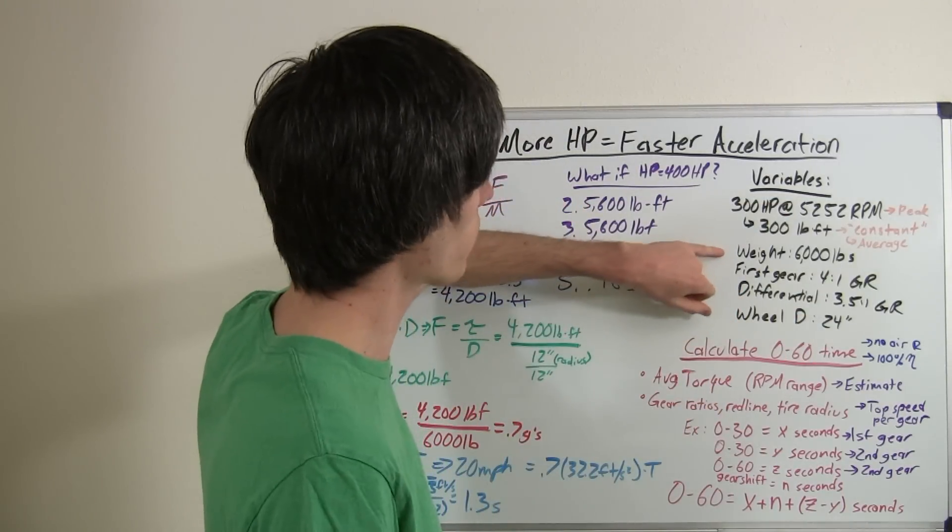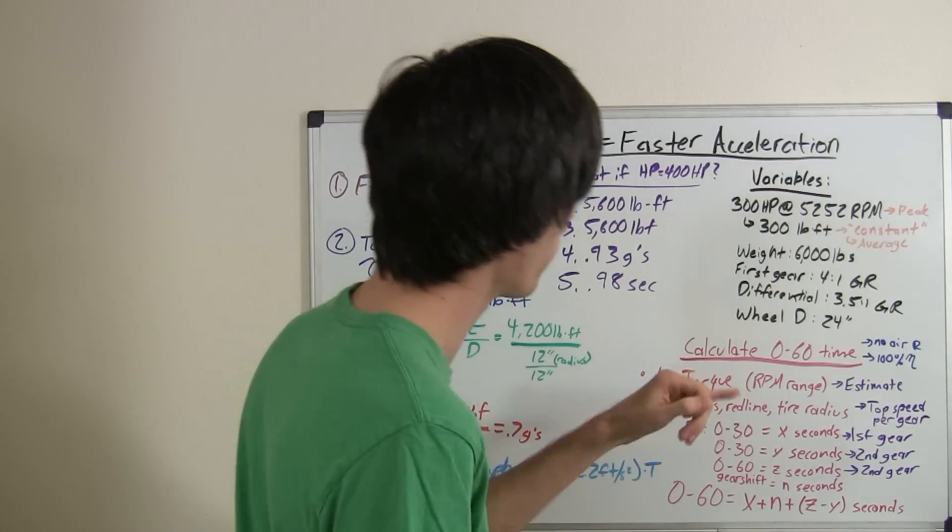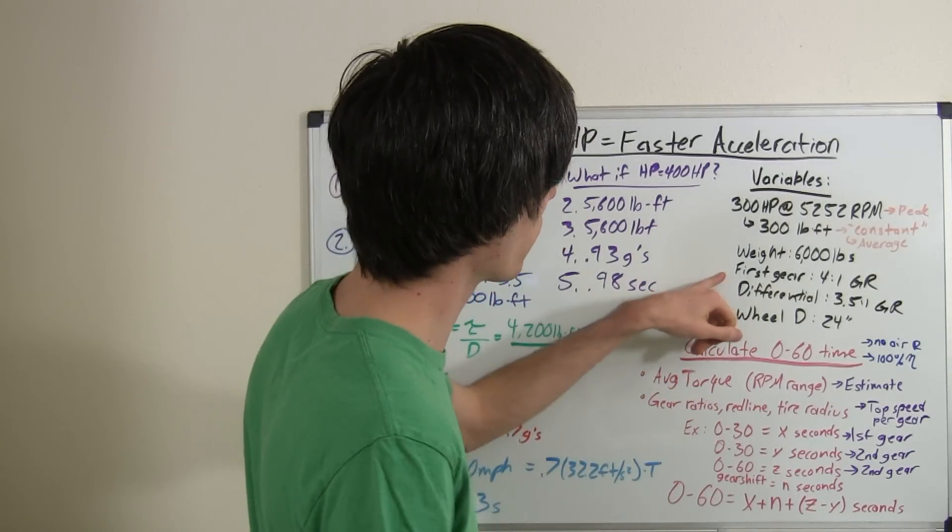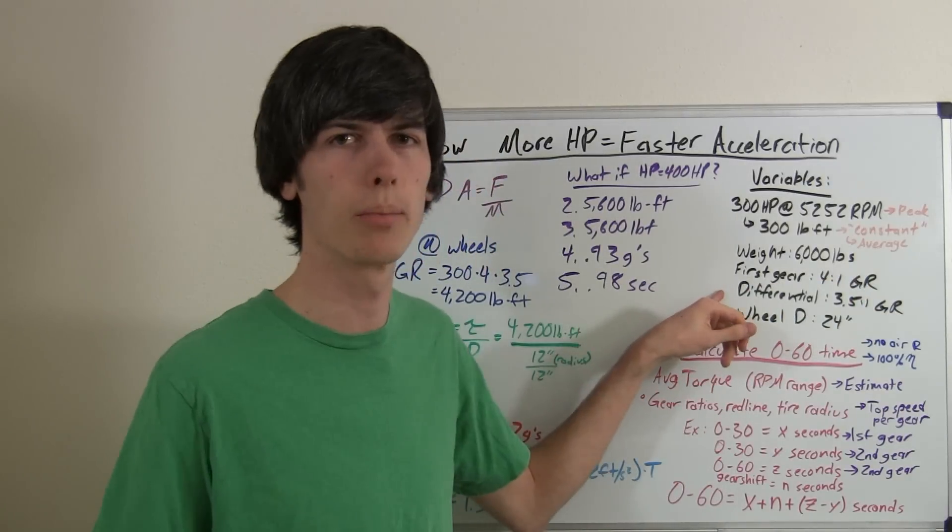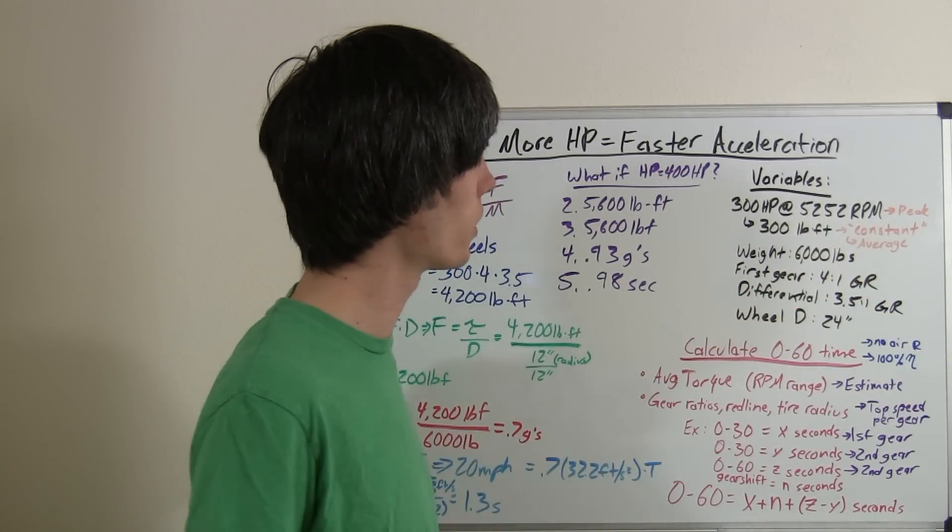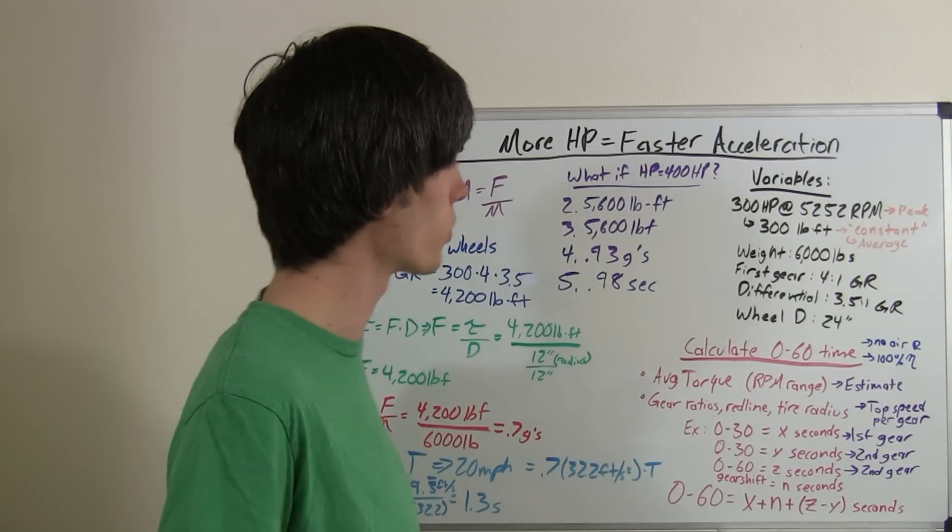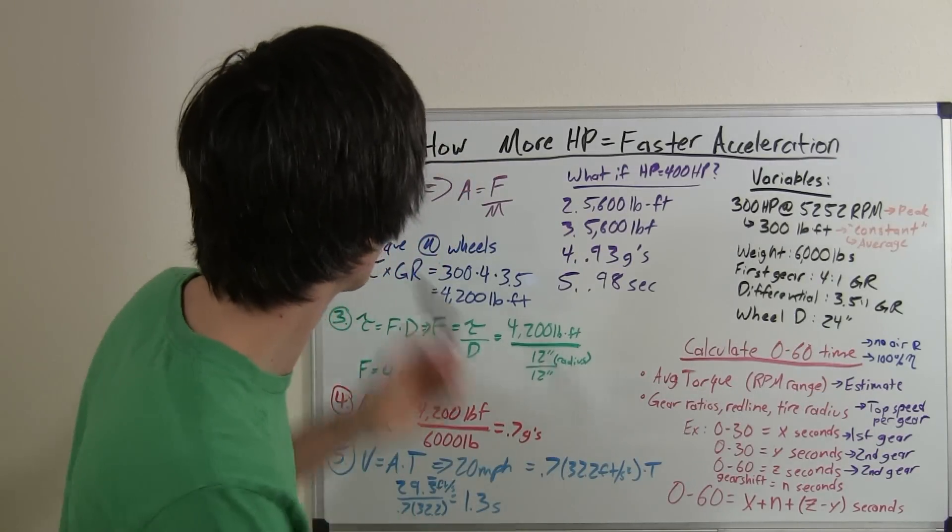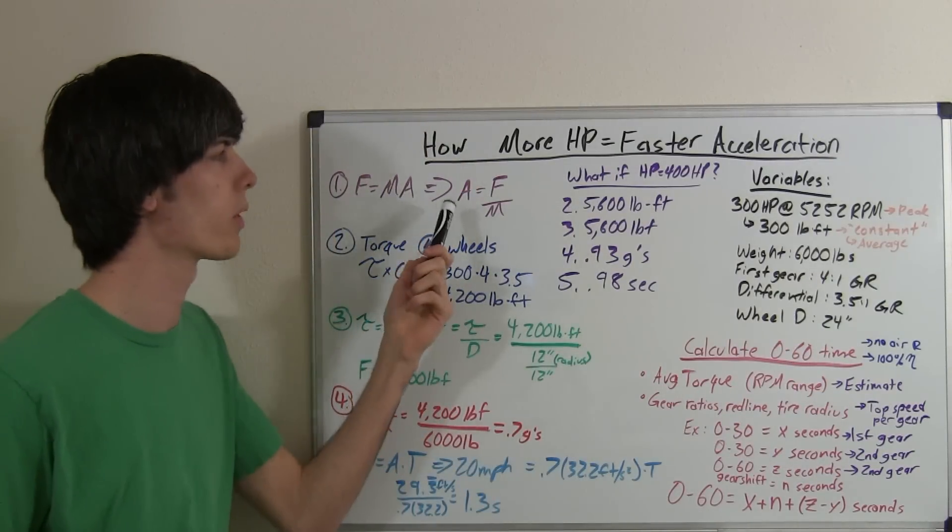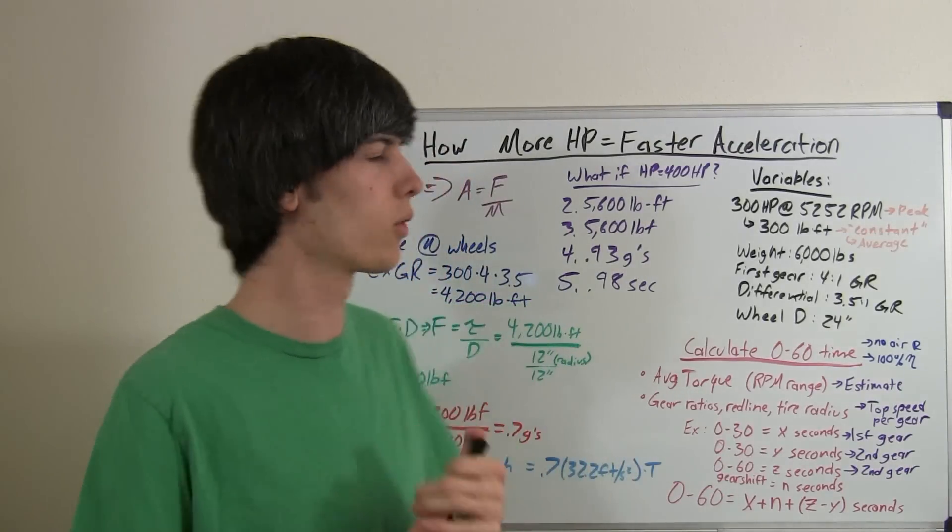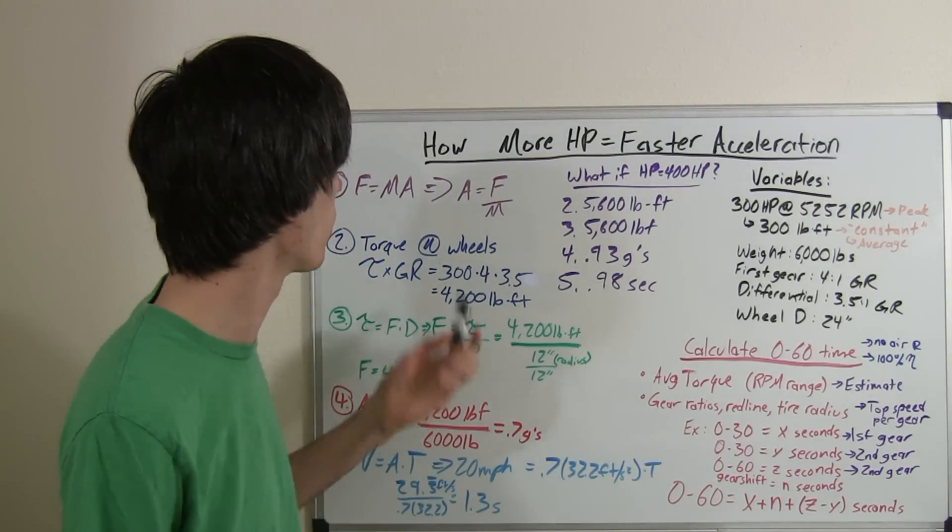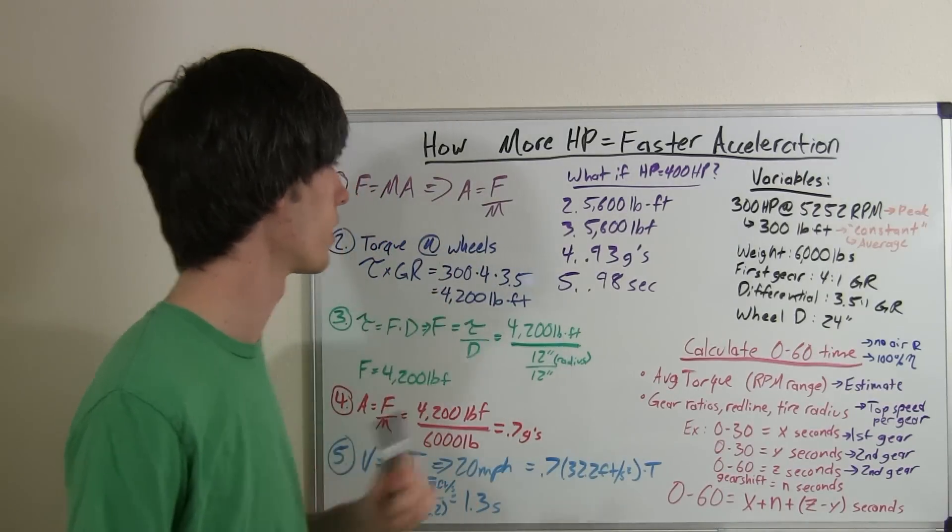So, our vehicle is going to be 6,000 pounds, pretty heavy. First gear is going to be a 4 to 1 gear ratio. The differential is going to have a 3.5 to 1 gear ratio. And our wheel is going to have a diameter of 24 inches. So, starting off, we know what we want to find is acceleration. And Newton tells us that force equals mass times acceleration. So, acceleration equals force divided by mass.